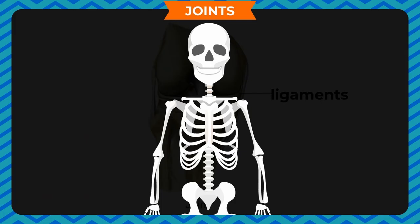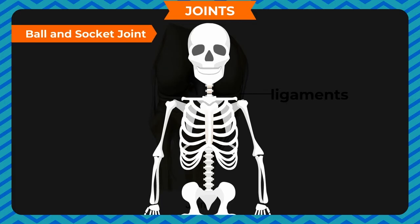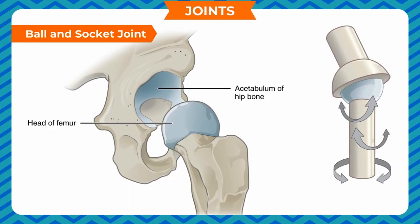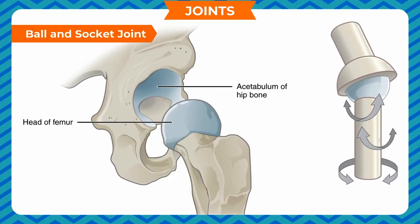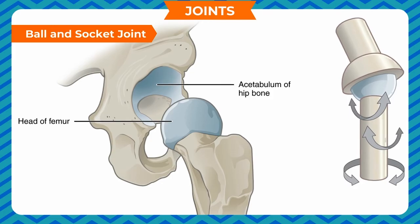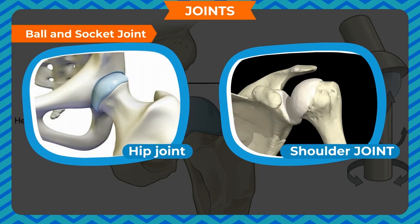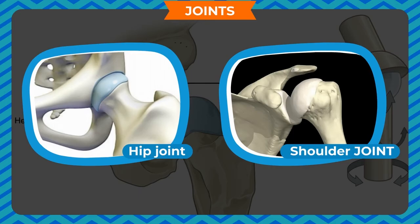Ball and socket joint: A ball-like end of one bone fits into the socket-like hollow of the other bone. These bones freely rotate about the joint. Location: hips and shoulders. The socket in the hip bone receives the ball-like head of the femur; the socket in the shoulder girdle receives the ball-like head of the humerus bone.